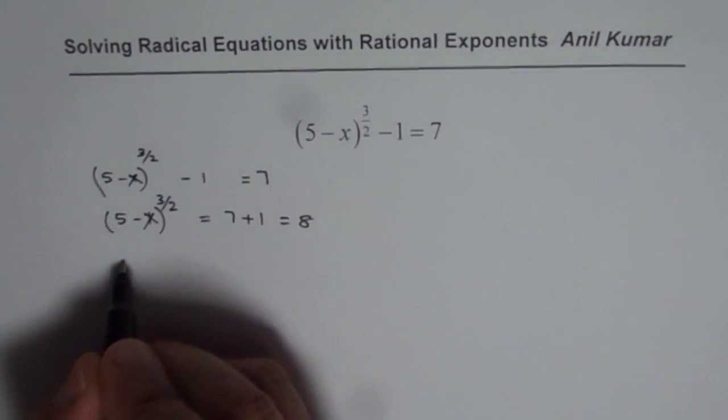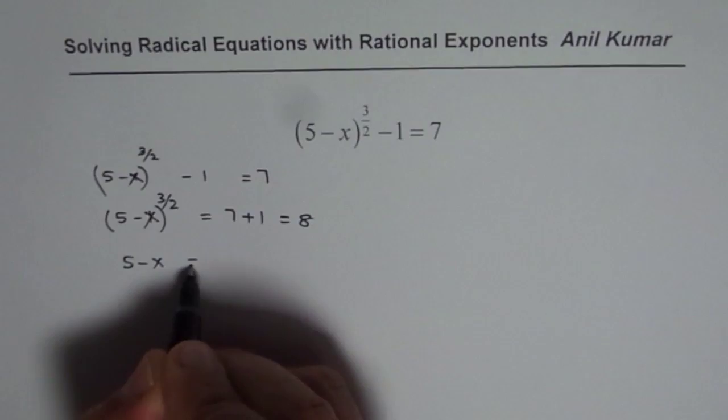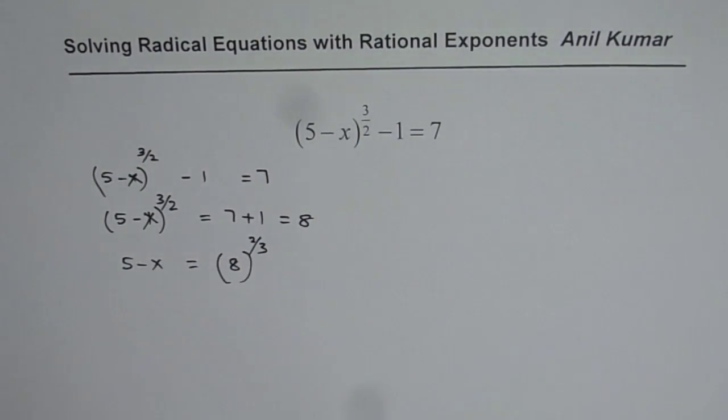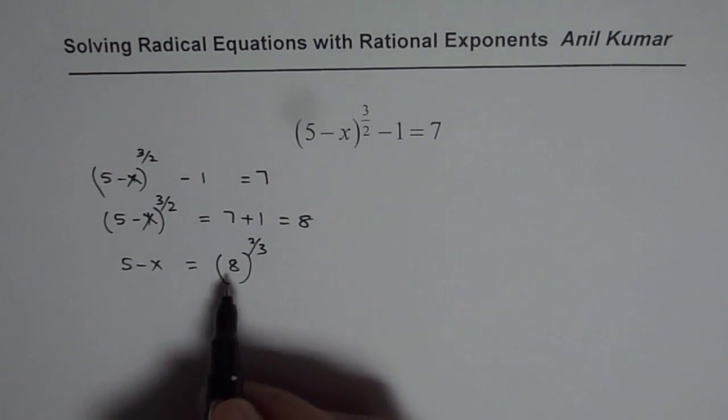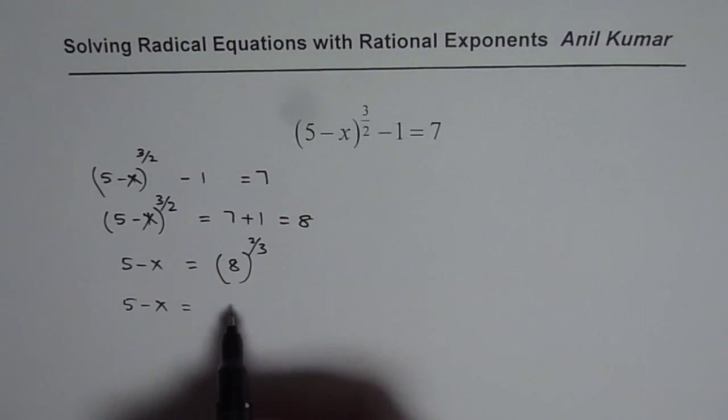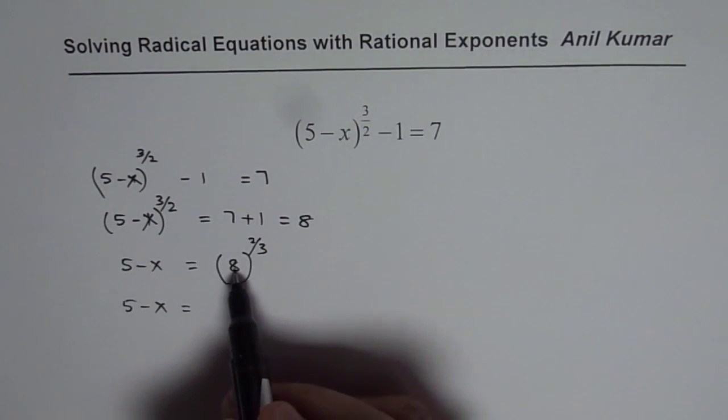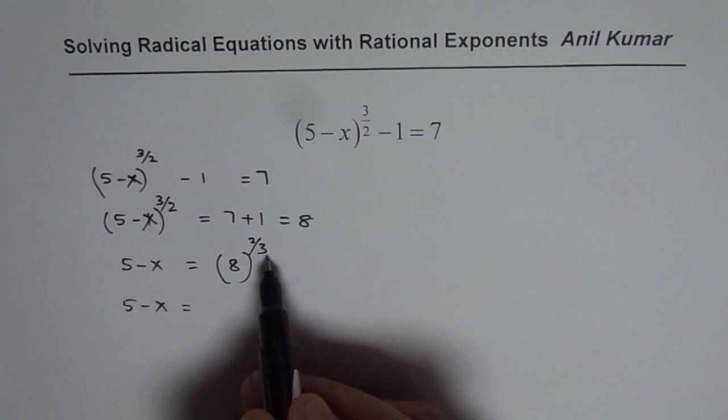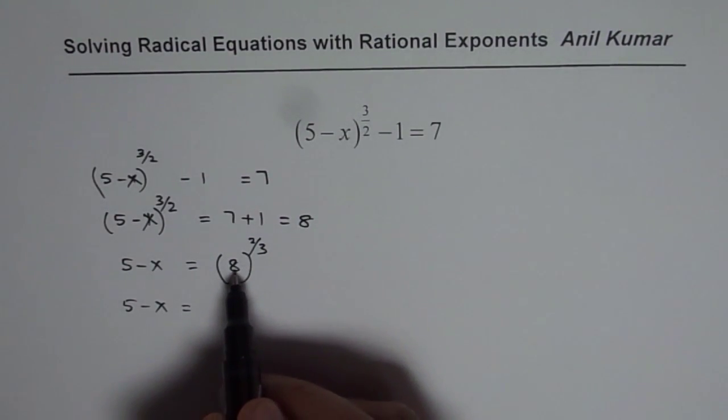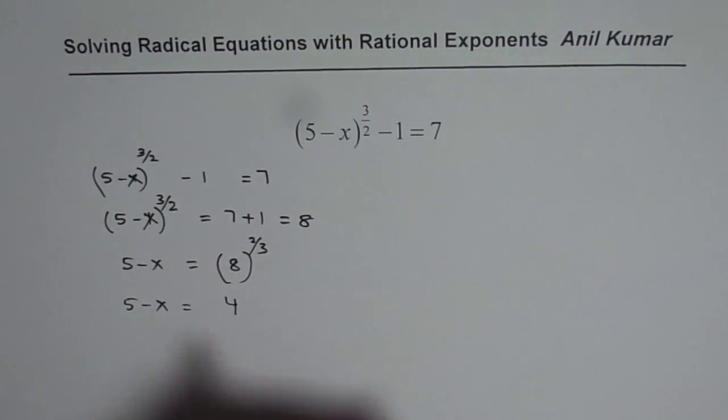Now we can write 5 minus x equals 8 to the power of 2 over 3. What is 8 to the power of 2 over 3? Well, you can square 8 first and then cube root, or you can cube root and then square. Either way, you get the same answer. Cube root of 8 is 2 and square of 2 is 4.